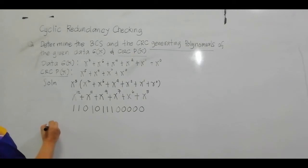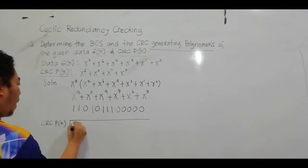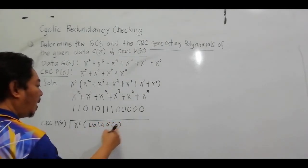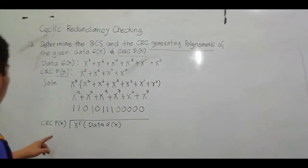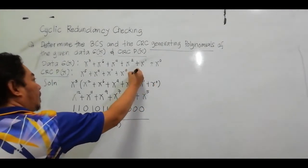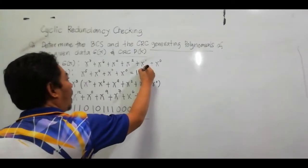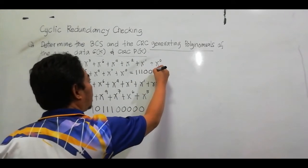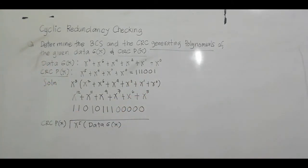The next step involves CRC PX. So let's solve for CRC PX. CRC PX is: X^5 = 1, X^4 = 1, X^3 = 1, X^2 = 0, X^1 = 0, and X^0 = 1. So this will be our divisor — the binary string 1 1 1 0 0 1. Now let's divide.